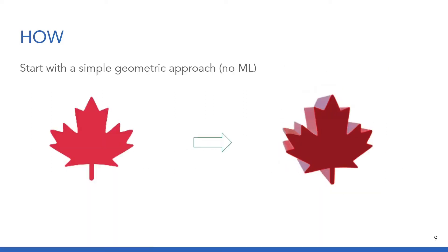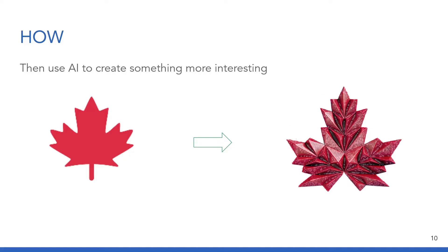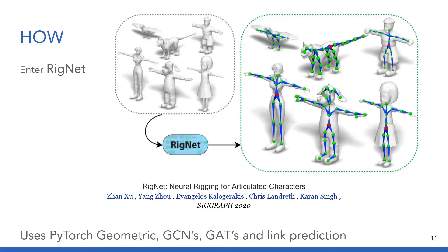To do this, we will start by using a straightforward geometric approach to extrude 2D designs into 3D. Then we will train an AI model to transform those simple 3D designs into something more creative and more interesting. We are using a model architecture from a project called Rignet, which was first presented at SIGGRAPH 2020.